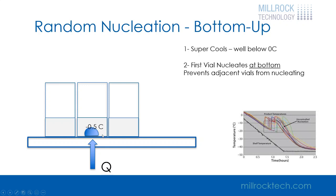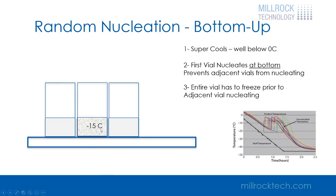Once the vial that nucleated forms a full ice crystal formation — or all the available water is crystallized — it begins to reduce in temperature, and as it does, the vials next to it can nucleate and then freeze.